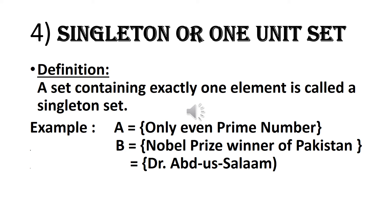A set containing exactly one element in it is called a singleton set. Example A: The only even prime number, which is 2. Example B: Nobel Prize winner of Pakistan, Dr. Abdus Salam. These are singleton sets.